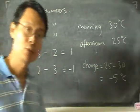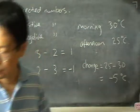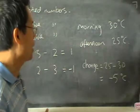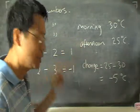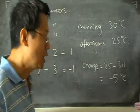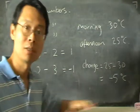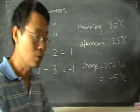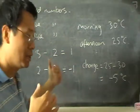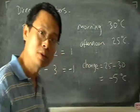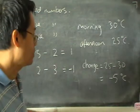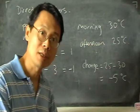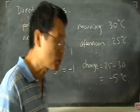You can imagine many situations where quantities change and you can use negative numbers. For example, the sea level goes up and down when you have high tide or low tide. So if the sea level goes down, you give the change a negative number and you can know that the tide has gone down.